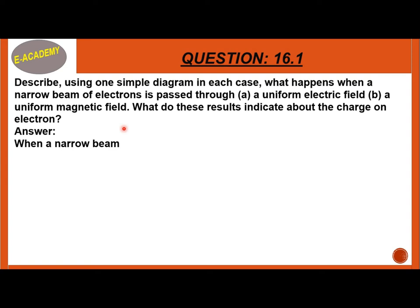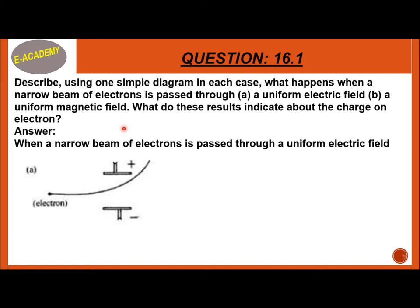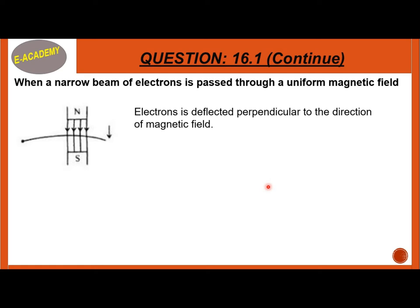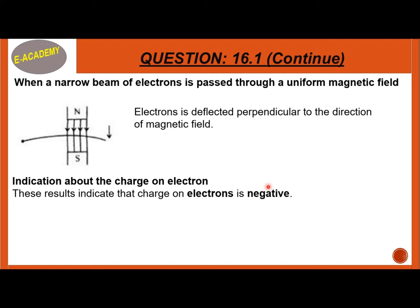When a narrow beam of electrons is passed through a uniform electric field, the electron is attracted towards the positive charge plate. When a narrow beam of electrons is passed through a uniform magnetic field, the electron is also deflected. The direction of the magnetic field and the direction of the electric field both have balanced negative effects.